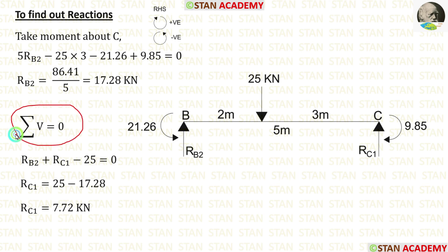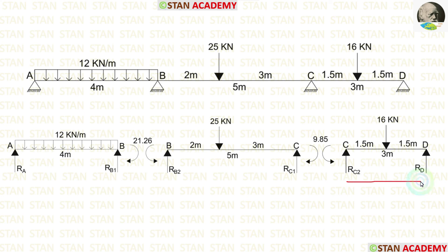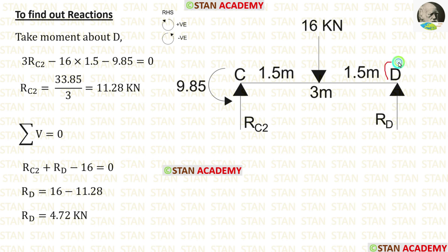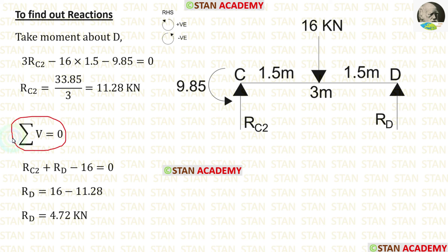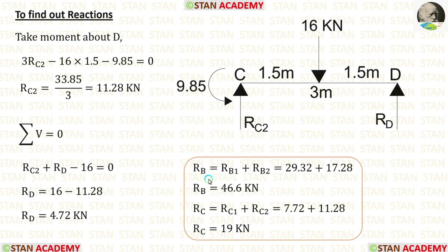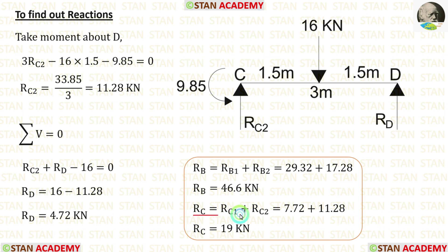Using ΣV = 0, we calculate RC1. Now let us take span CD and find the reactions. In span CD, there is only one moment MC acting in the anti-clockwise direction. By taking moments about D, we calculate RC2 = 11.28 kN. Applying ΣV = 0, we calculate RD. At point B, adding RB1 and RB2 gives RB = 46.6 kN. At point C, adding RC1 and RC2 gives RC = 19 kN.